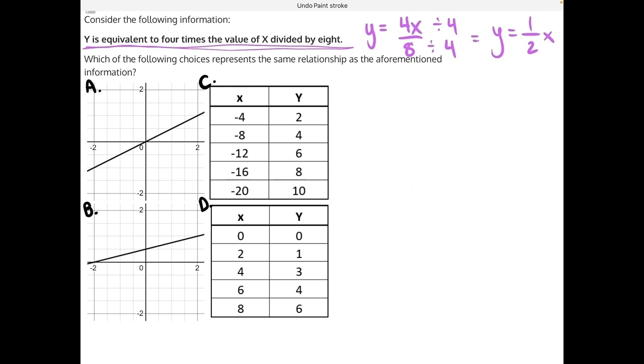And that's going to allow us to eliminate one of our graph answers, and that is answer choice B, because it has a y-intercept right here. A is still on the board because it goes through the origin, 0, 0. But let's start by looking at our tables.